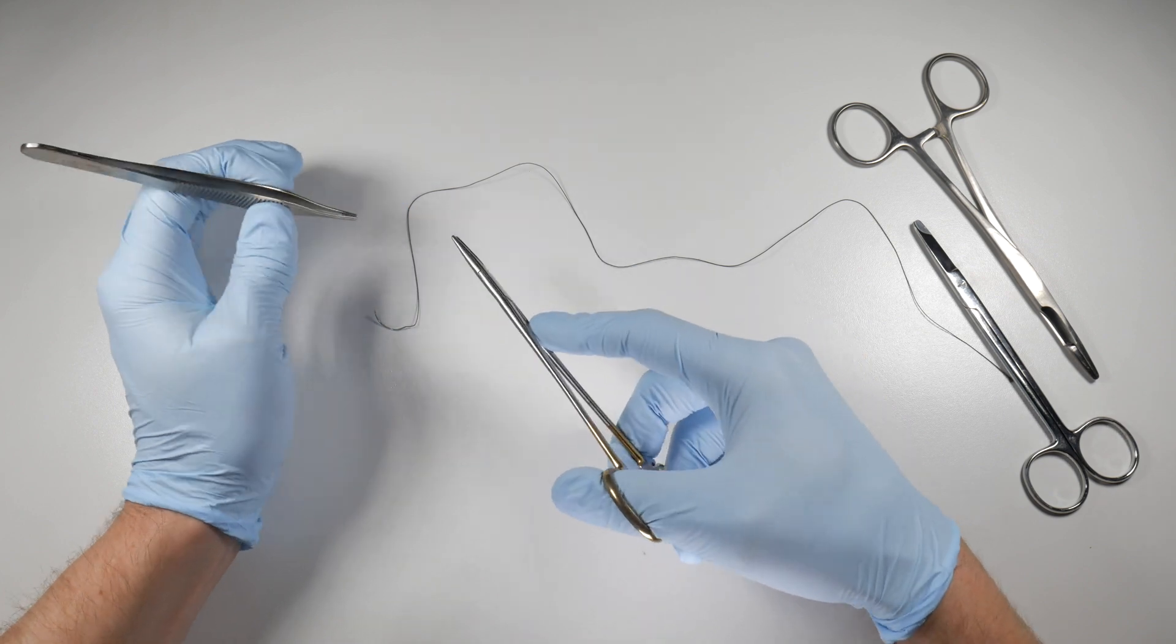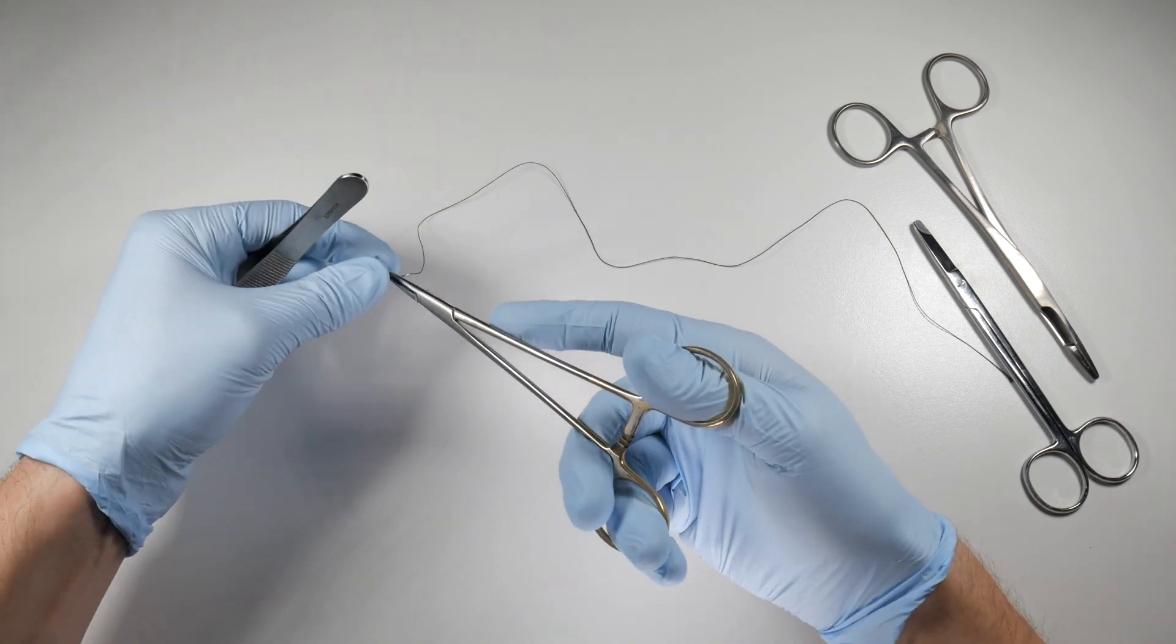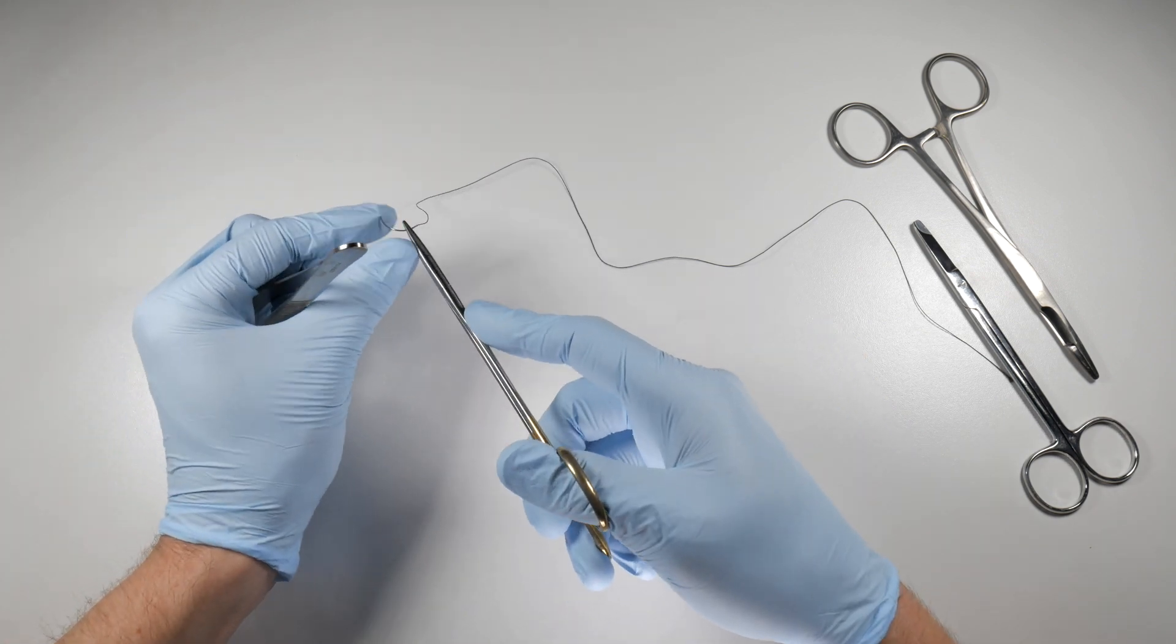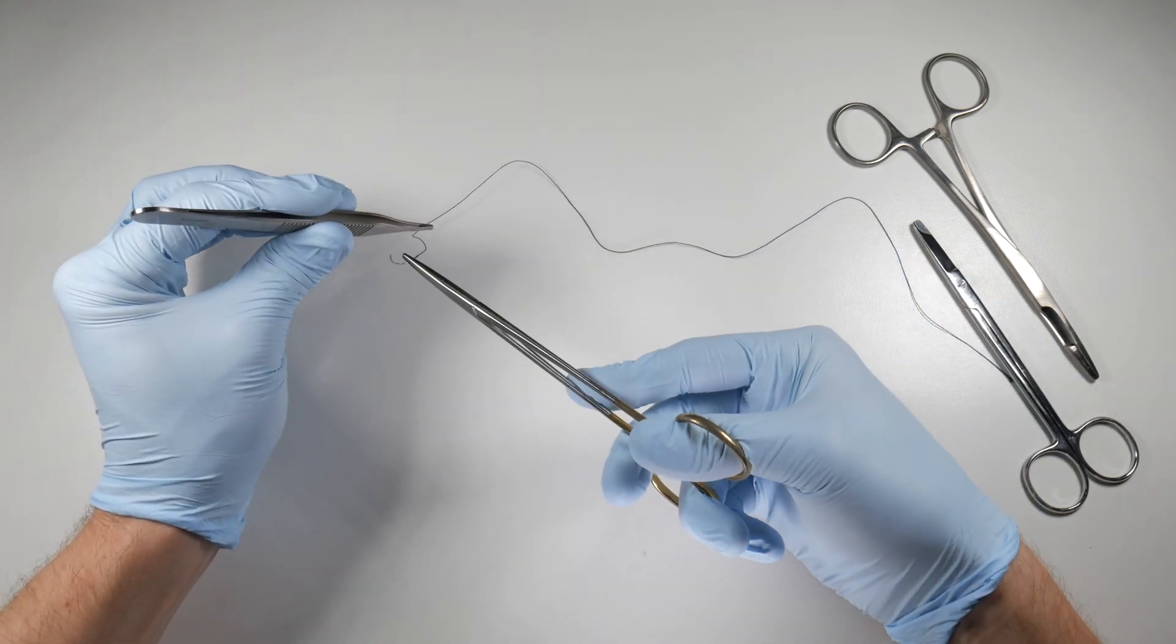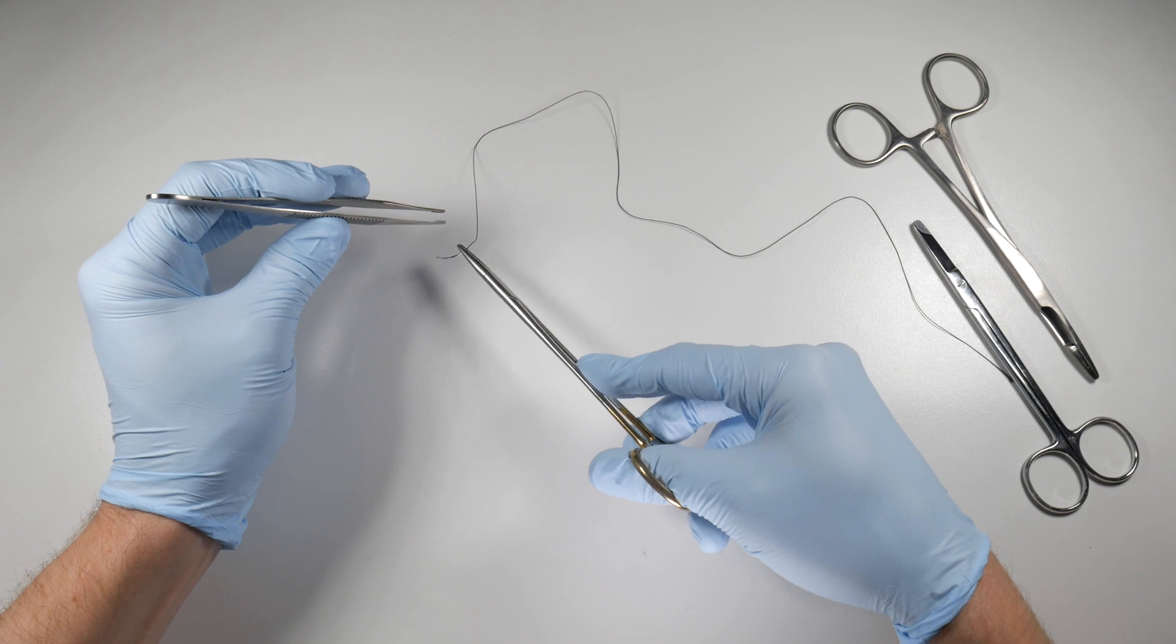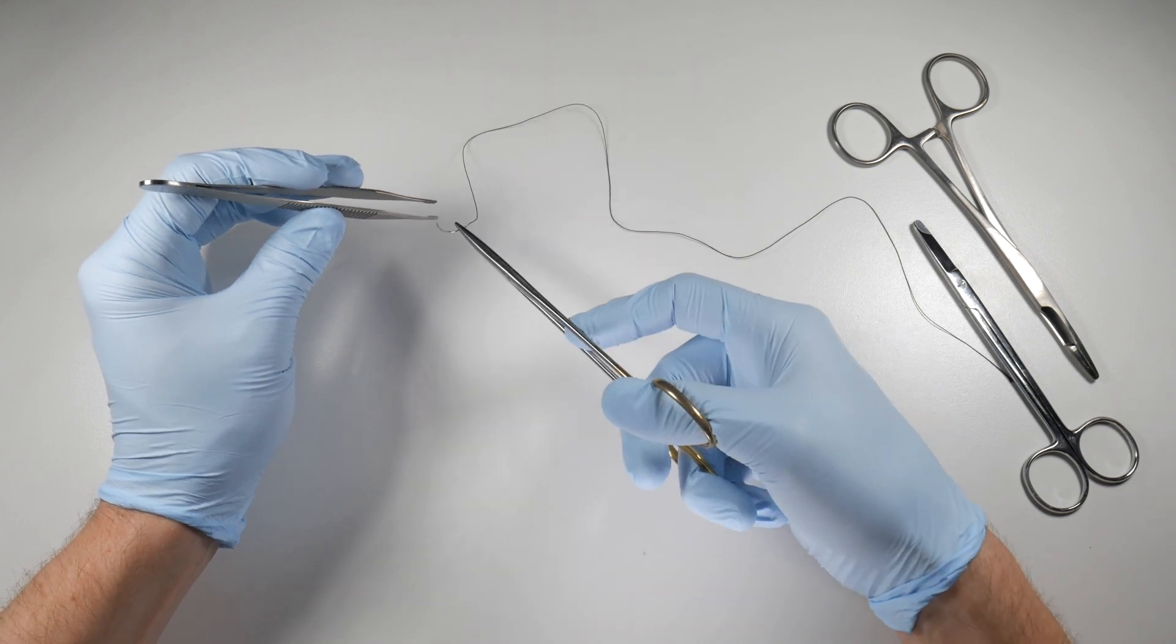You can also use this when you are suturing and maybe you can't make a complete bite or a complete pass from one side to the other of your flap. So say you're spanning a larger area, you need to make two bites. You can stop.